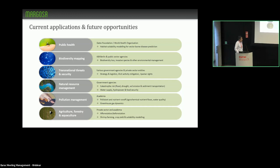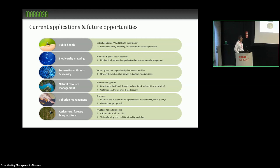There are water supply and hydropower applications as well, and food security is closely tied with that. In academia, there's pollutant and nutrient runoff — we have a prior paper on modeling nitrogen and phosphorus concentrations in water, and this dataset complements that exercise very well. There are also applications in forestry, shrimp farming, and crop yield and suitability modeling.